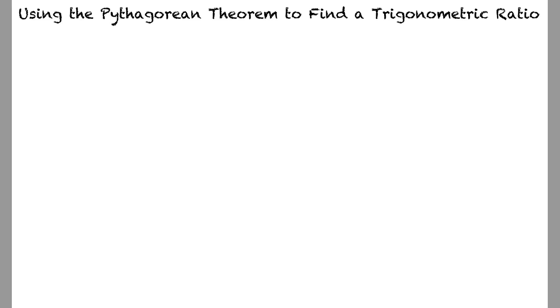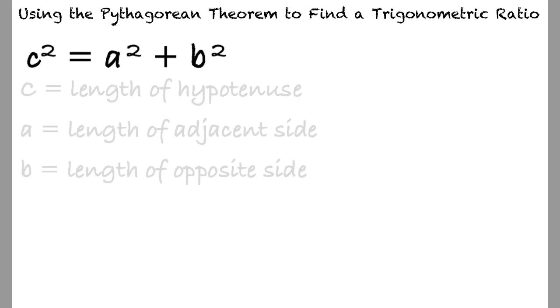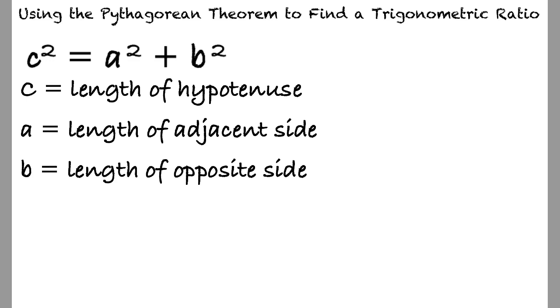Let's begin by stating the Pythagorean theorem. c squared equals a squared plus b squared, where c equals the length of the hypotenuse, a equals the length of the adjacent side, and b equals the length of the opposite side.